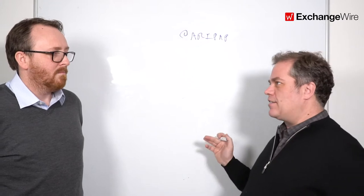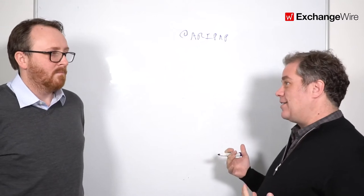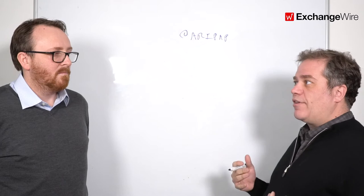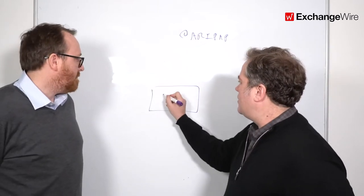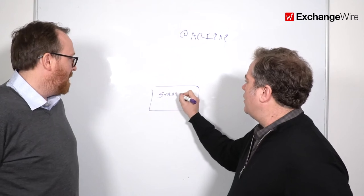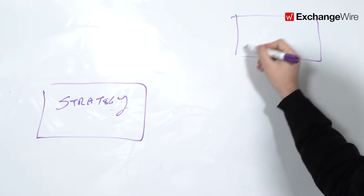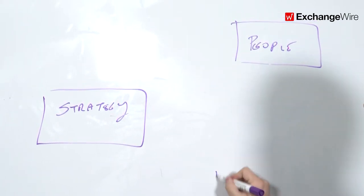In terms of in-housing, the way I think about it is you have to think about three different parameters. It's not for everyone - there are plenty of brands that are very well suited to have an agency controlling most of their program. But for those who want to take a little more control, there's really three things to think about.